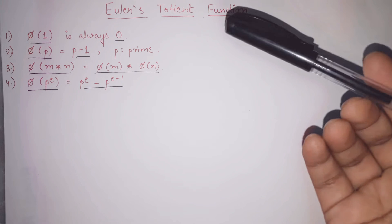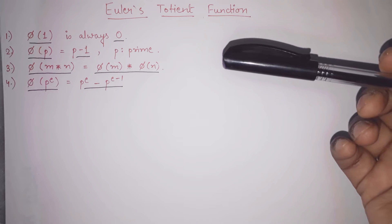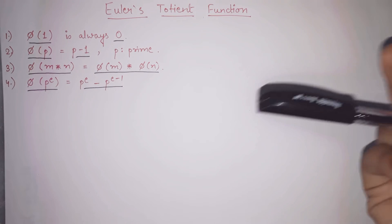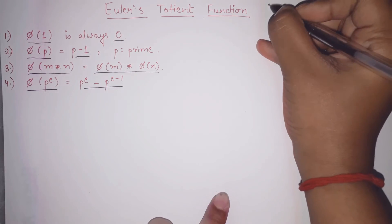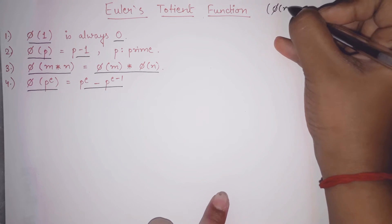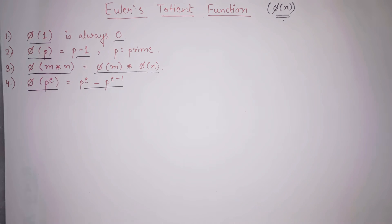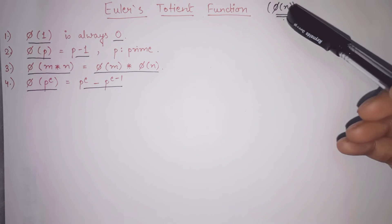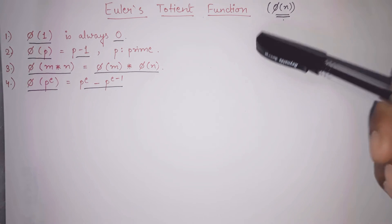This function is all about counting the positive integers up to a given integer such that these two numbers are relatively prime. This Euler's Totient function is denoted by phi. When I say phi of n, I have to find out the number of positive integers such that those integers and n are relatively prime. This is the use of Euler's Totient function.